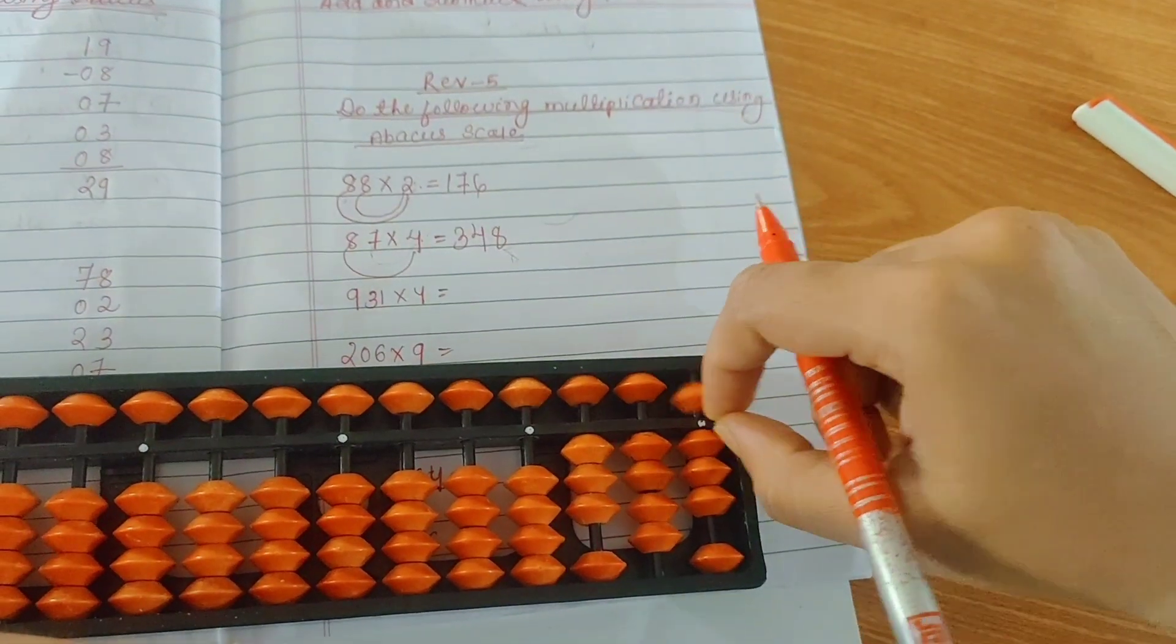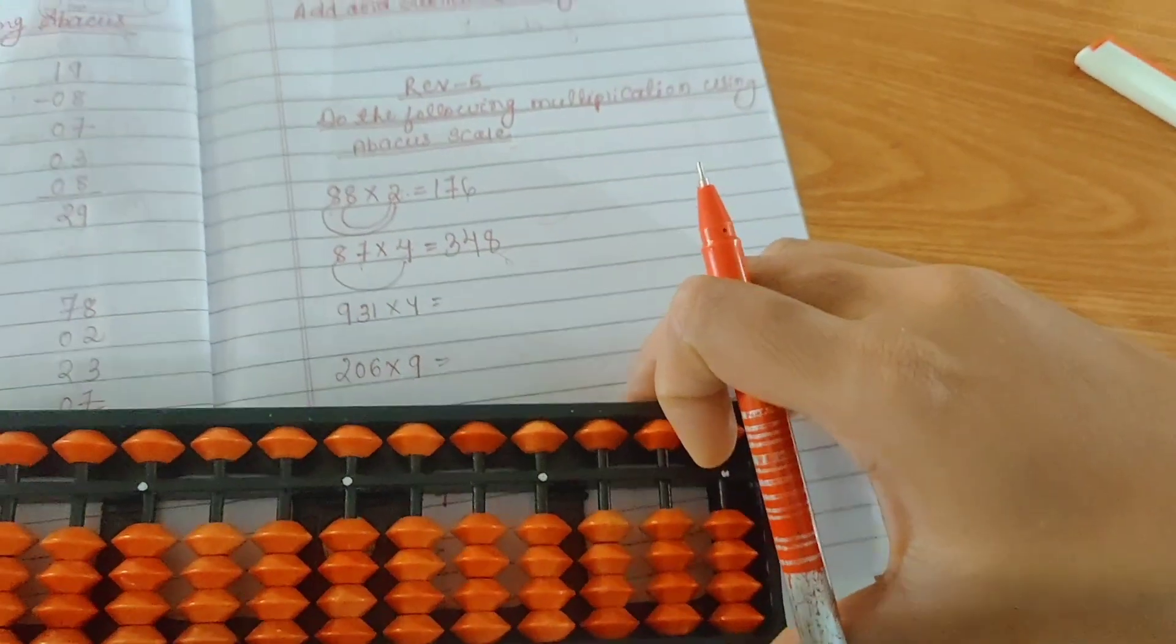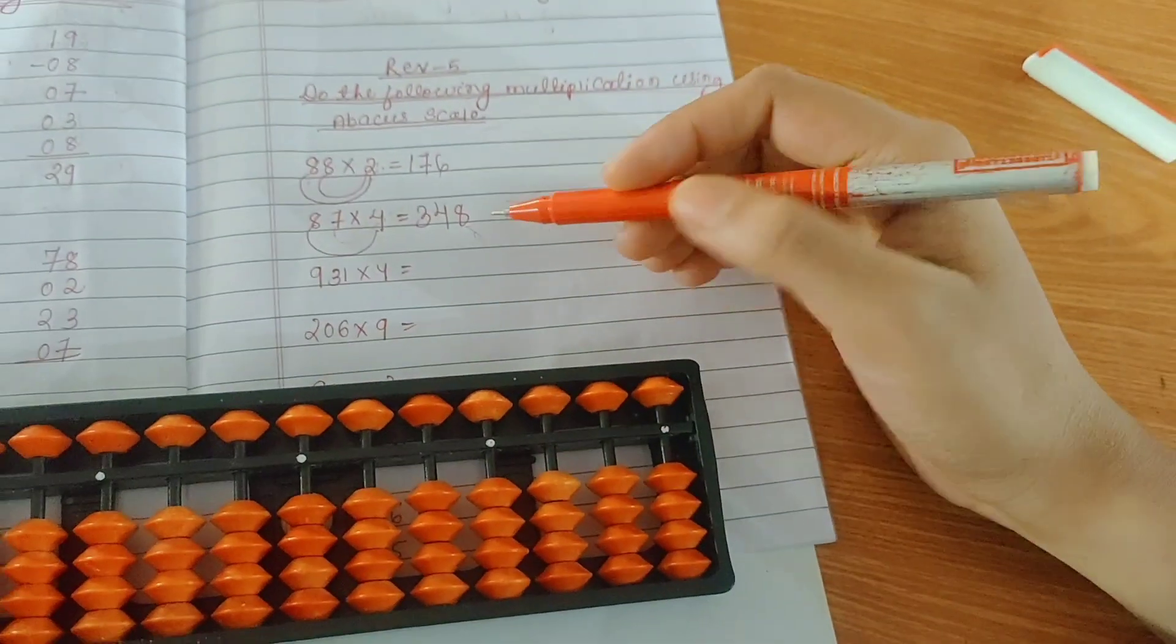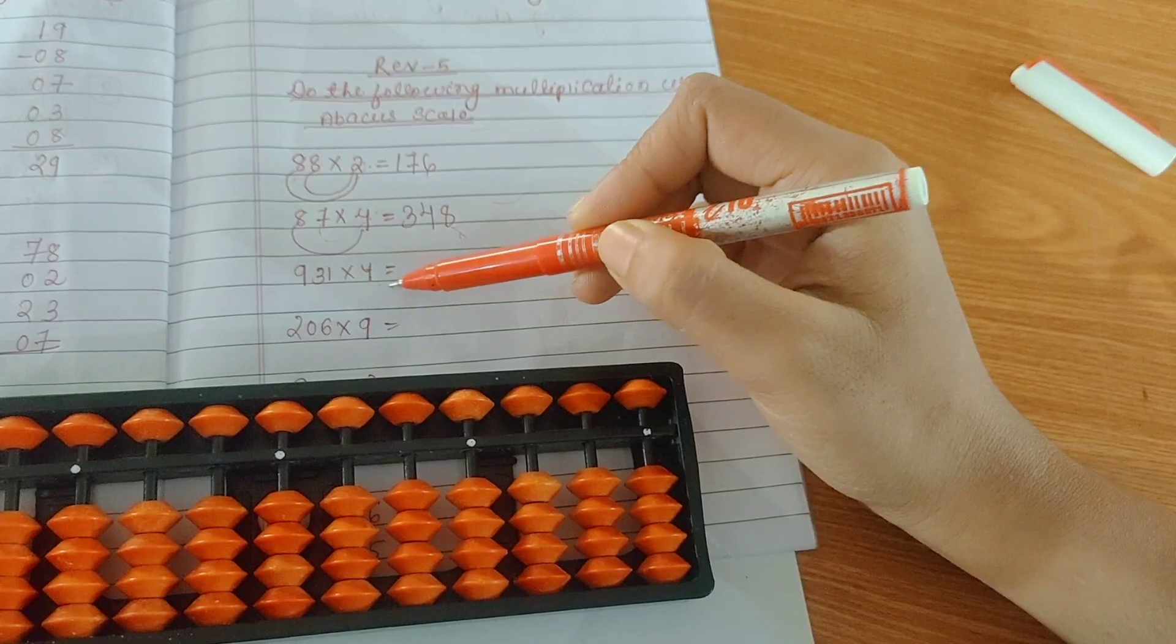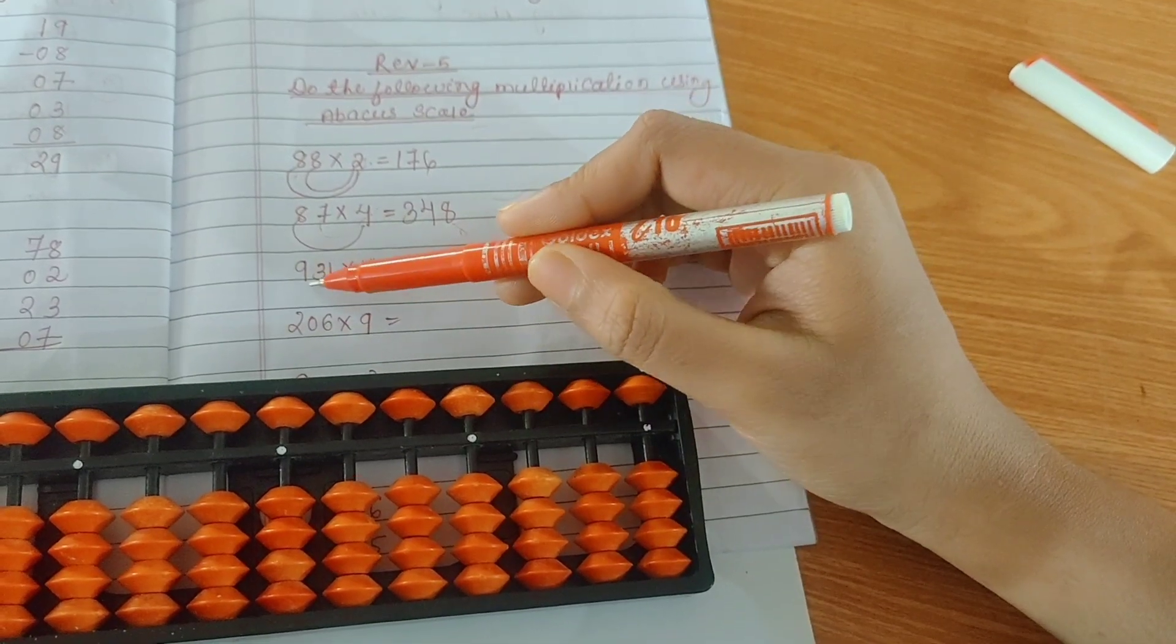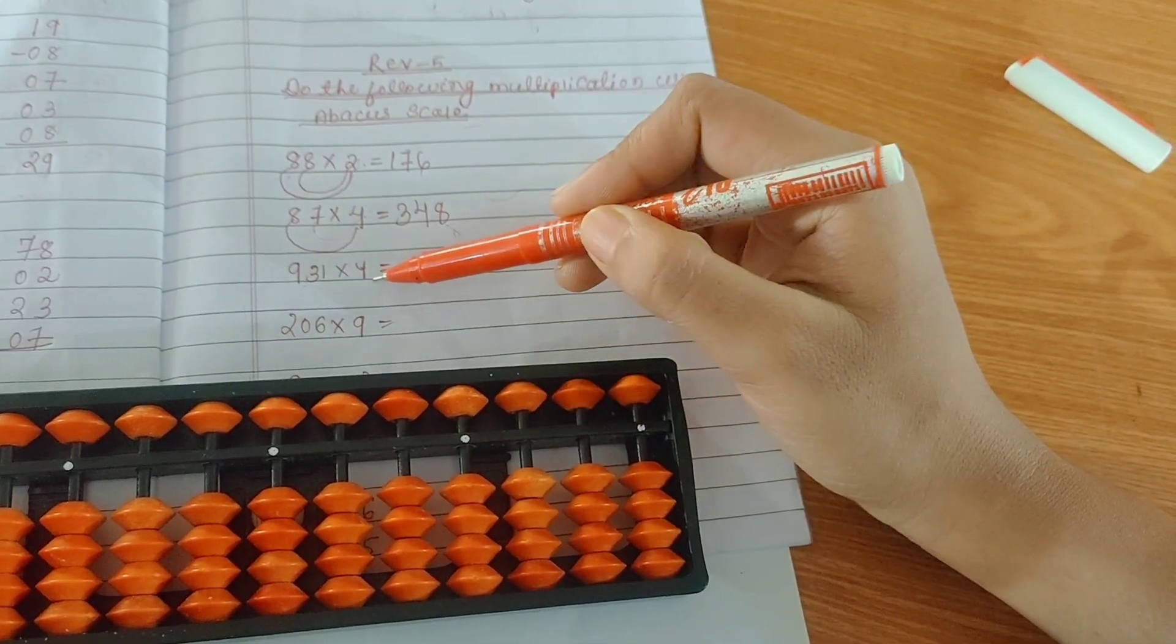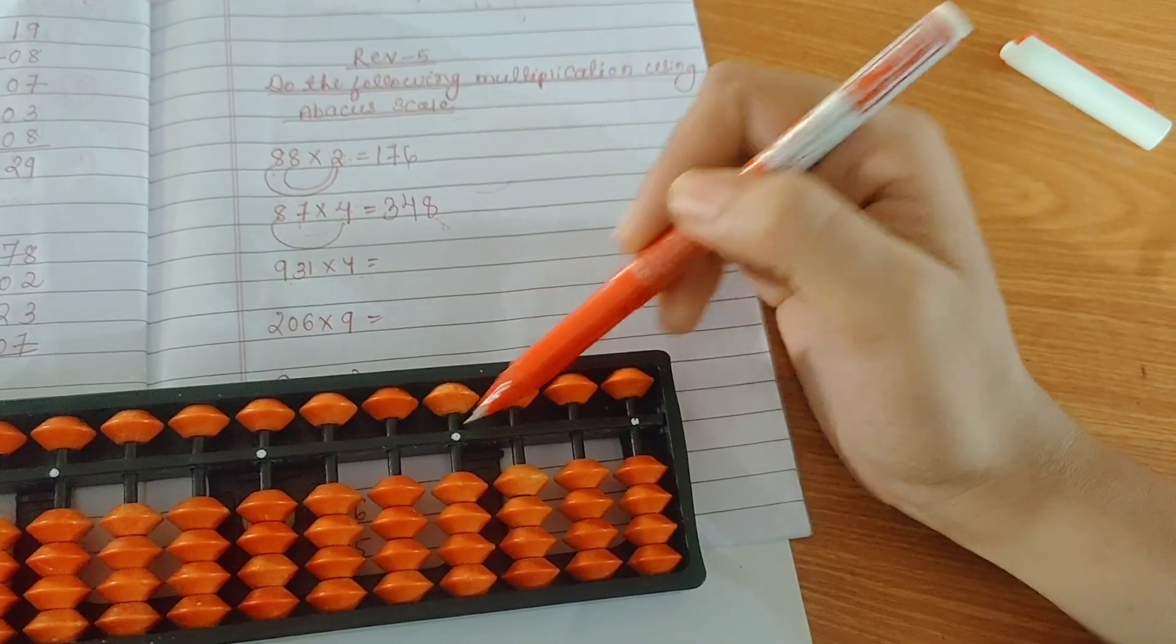Clear the scale. Next, 931 multiply by 4. First, see how many digits the question has. 1, 2, 3, 4 digit question, means you will start the answer from fourth row.